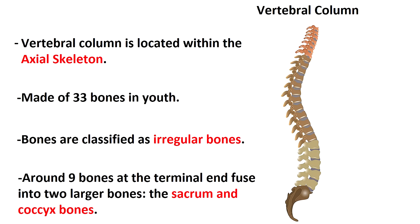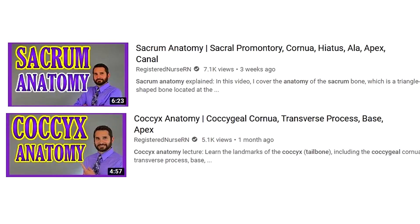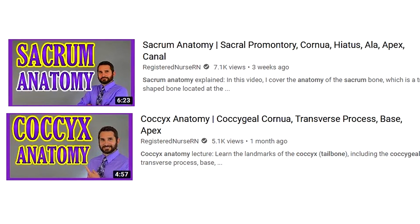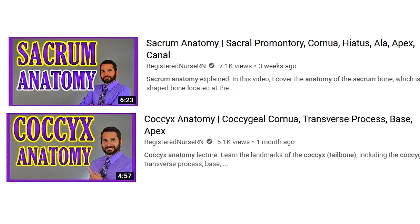The vertebral column is part of the axial skeleton and it is made up of 33 individual bones during youth, which anatomists classify as irregular bones. Approximately nine of the bones at the terminal end of the spine later fuse in adulthood to form two larger bones: the sacrum and the coccyx, which I covered in detail in previous anatomy videos on this channel.